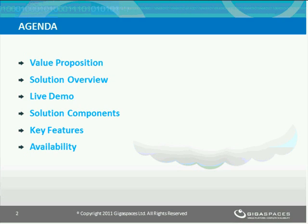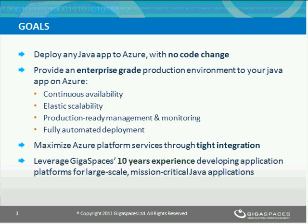After the demo part, a more in-depth technical deep dive will follow, in which we will go over the architecture and the main solution building blocks, then wrap up with the key features you can expect and its availability date. When we designed the joint Azure GigaSpaces solution, four key goals were defined. Goal number one was to provide the customer with the ability to deploy any Java app onto Azure — up to the most complex enterprise Java application — with no code change.